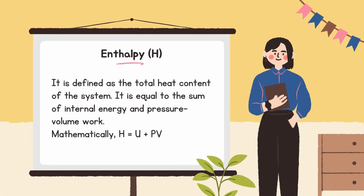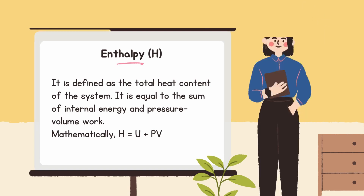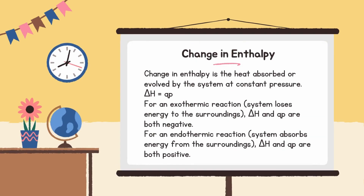Next is enthalpy H, defined as the total heat content of the system. It is equal to the sum of internal energy and pressure-volume work. Mathematically, H equals U plus PV. Change in enthalpy is the heat absorbed or evolved by the system at constant pressure, that is, ΔH equals Q_P. For an exothermic reaction, the system loses energy to the surroundings, and ΔH and Q_P are both negative. For an endothermic reaction, the system absorbs energy from the surroundings, and ΔH and Q_P are both positive.